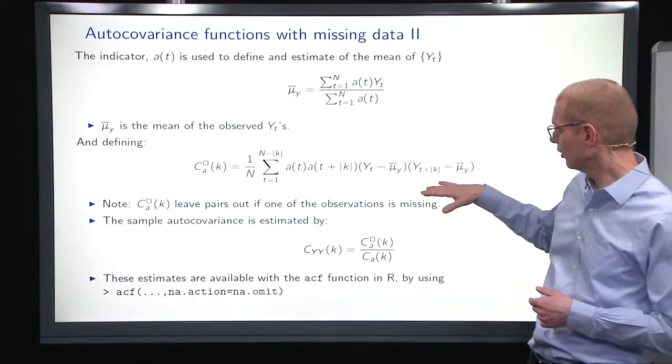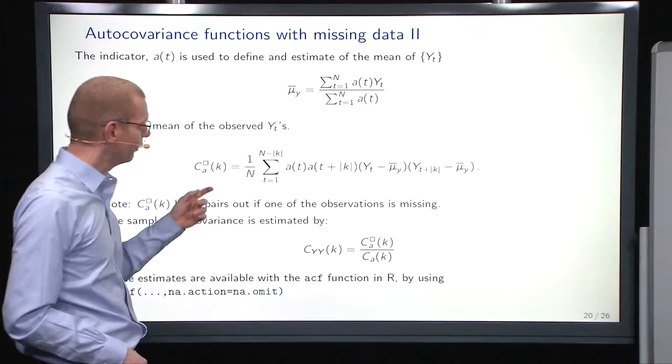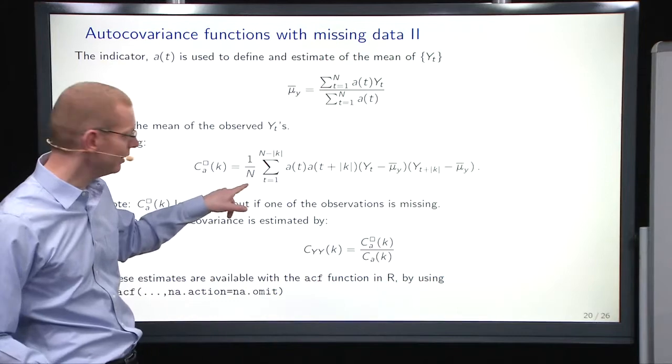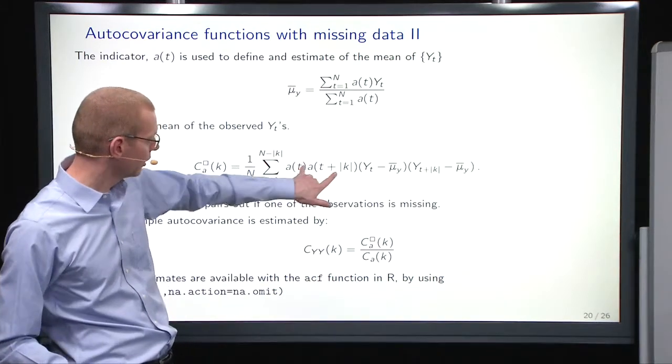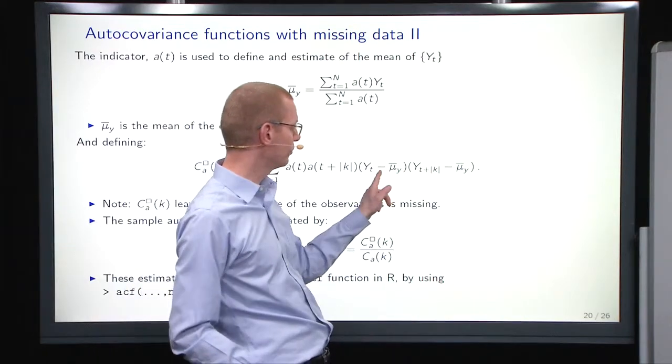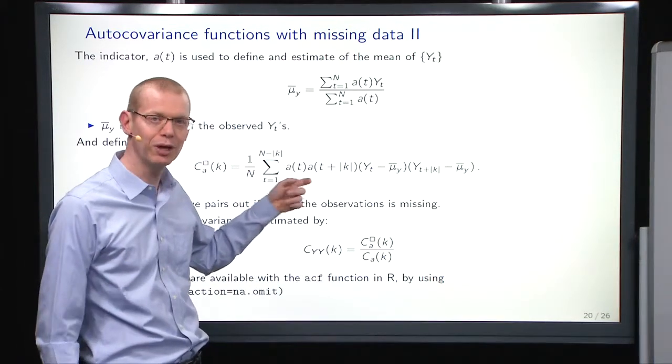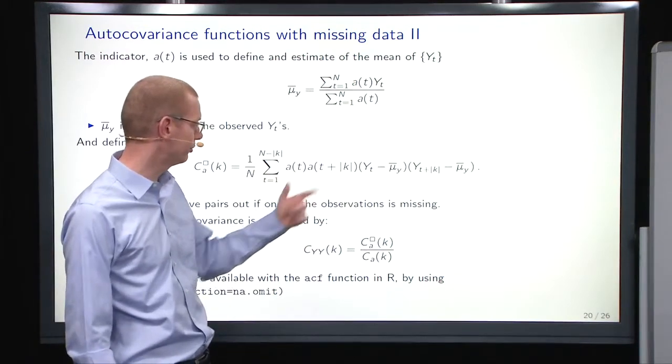And now we can also start looking at not quite the autocovariance function because we divide by n out here, but we look at an indicator here, 0, 1 multiplied by the corresponding pair. And that means that we only get a contribution to the sum if the pair is observed.